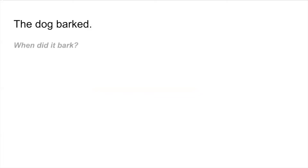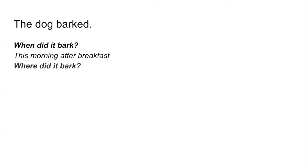Let's look at the next example: "The dog barked." Using the same questions, let's see what we can come up with. When did it bark? We could say this morning, last night, yesterday, four o'clock. I decided to say this morning after breakfast — I wanted to get really specific. Where did it bark? It could have barked outside in the backyard, at the park, in the bedroom. I decided to say in the backyard.